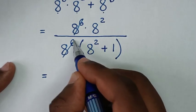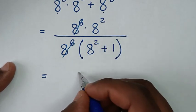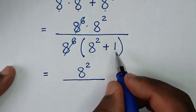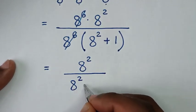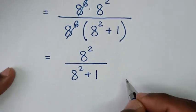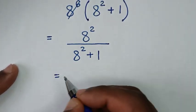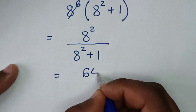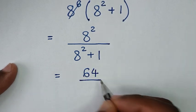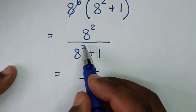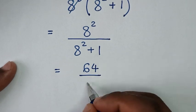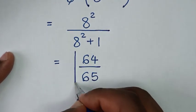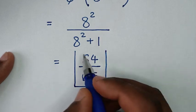Now we cancel the 8 power 6 in the numerator and denominator. This leaves us with 8 power 2 over (8 power 2 plus 1). 8 squared equals 64, and 64 plus 1 equals 65. Therefore, 64 over 65 is our final answer.